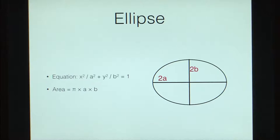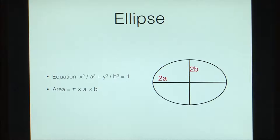For an ellipse with axes 2A and 2B, the equation is x²/A² + y²/B² = 1, and the area is π×A×B. In the case of most trees, we take their cross-sectional areas as either circular or elliptical.